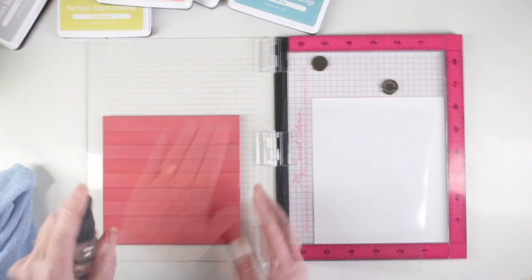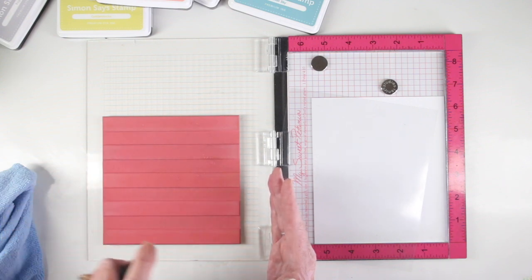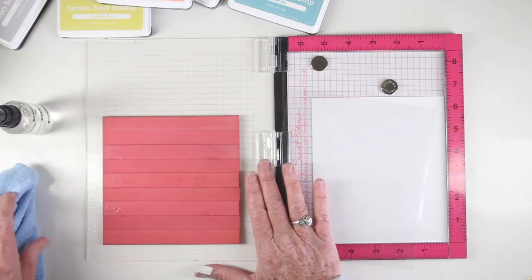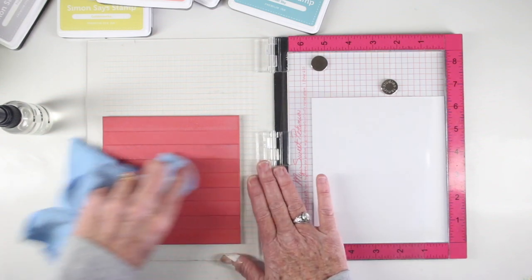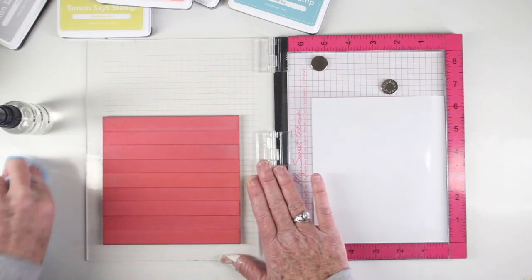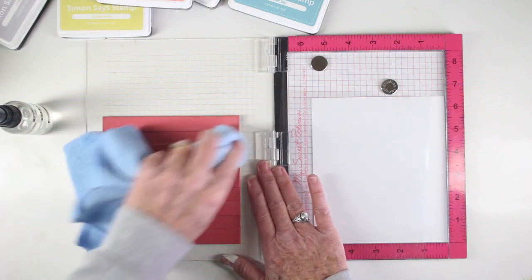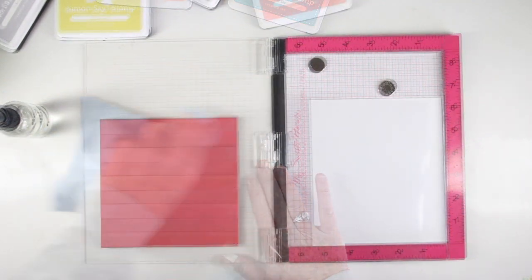Since this image is solid I want to make sure I have it really nice and clean, so I'm just using some water in a spray mister and a microfiber cloth just to wipe that down. If I have any dust or remnants on there I won't get a clean image when I stamp onto the paper.